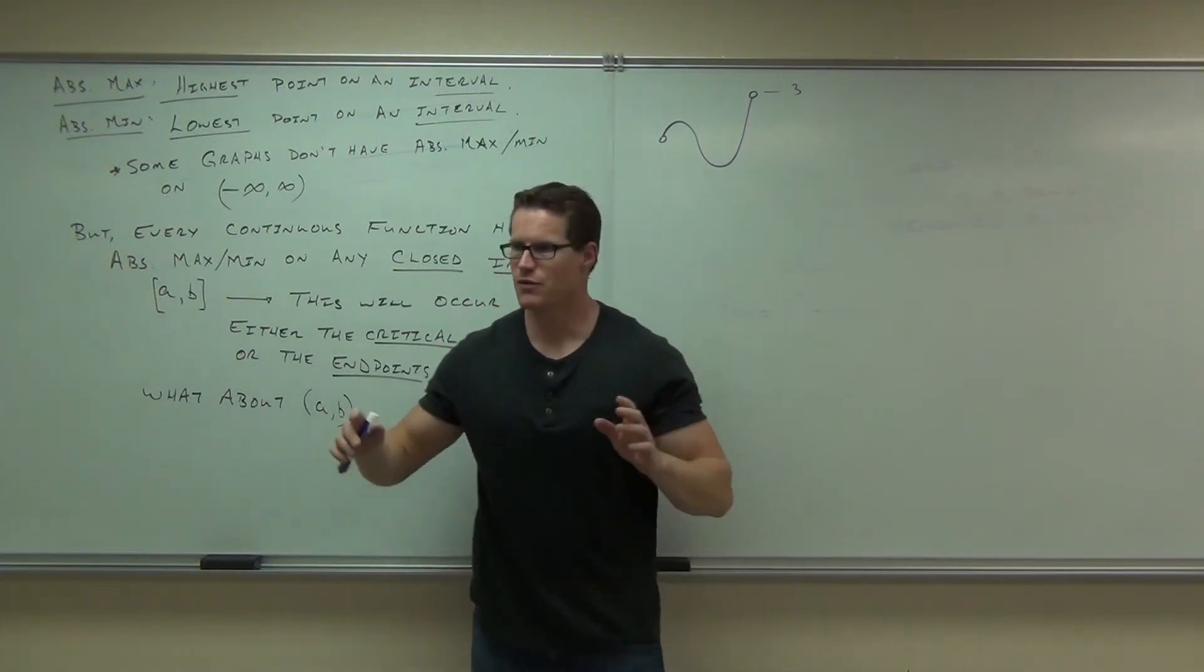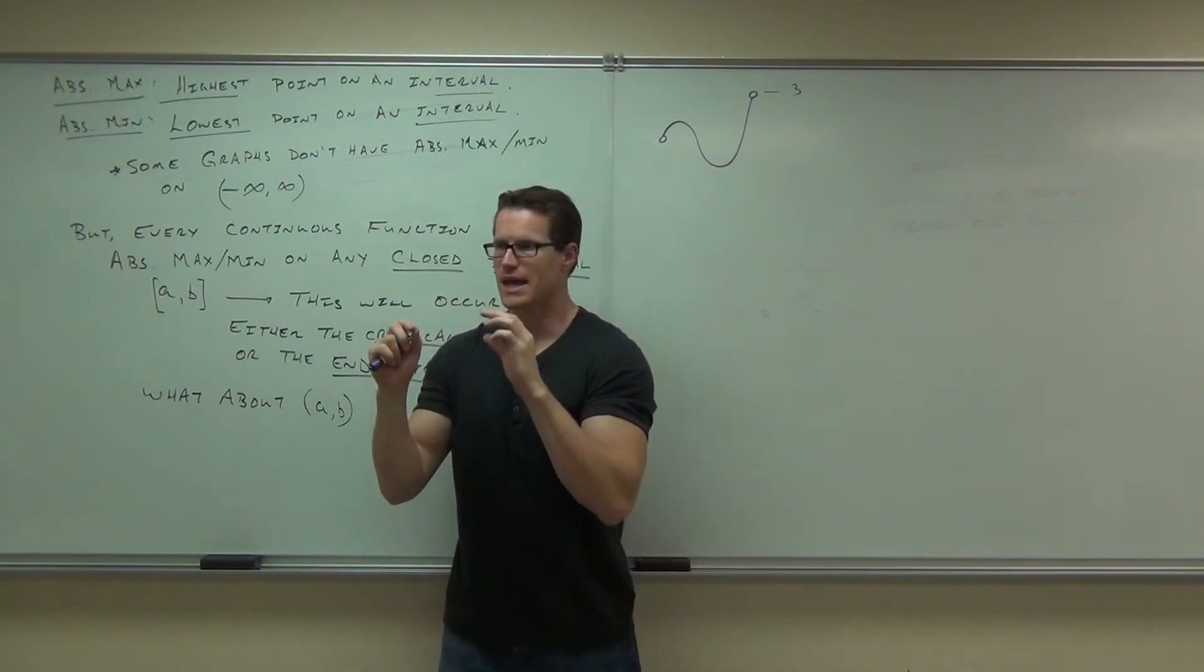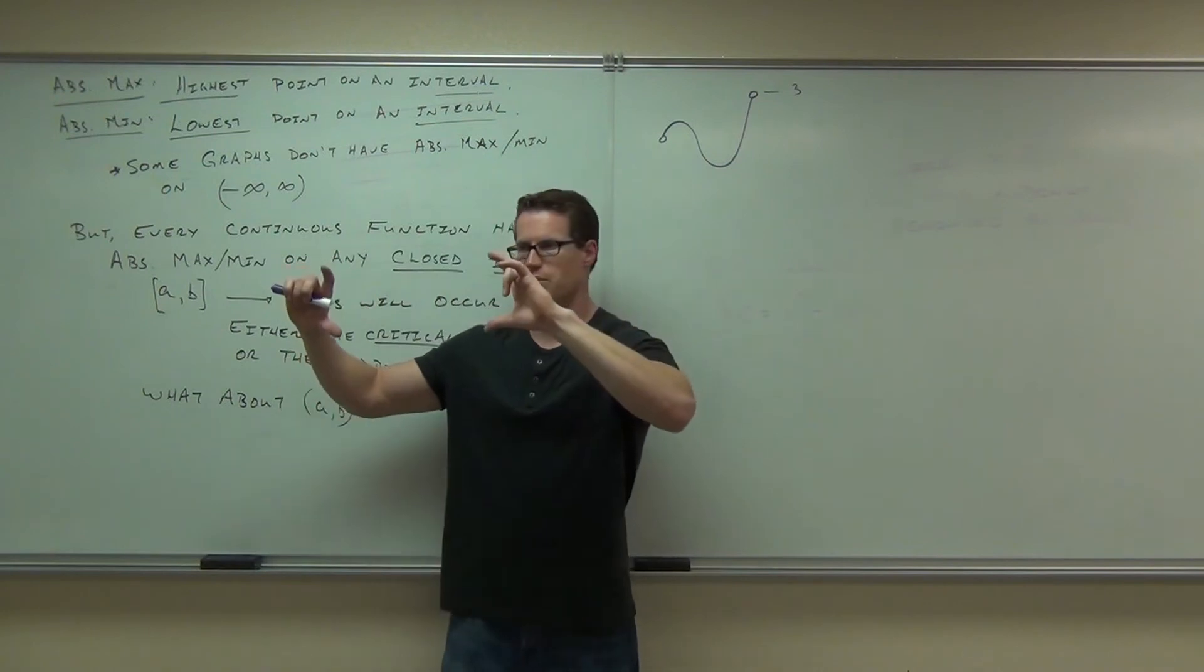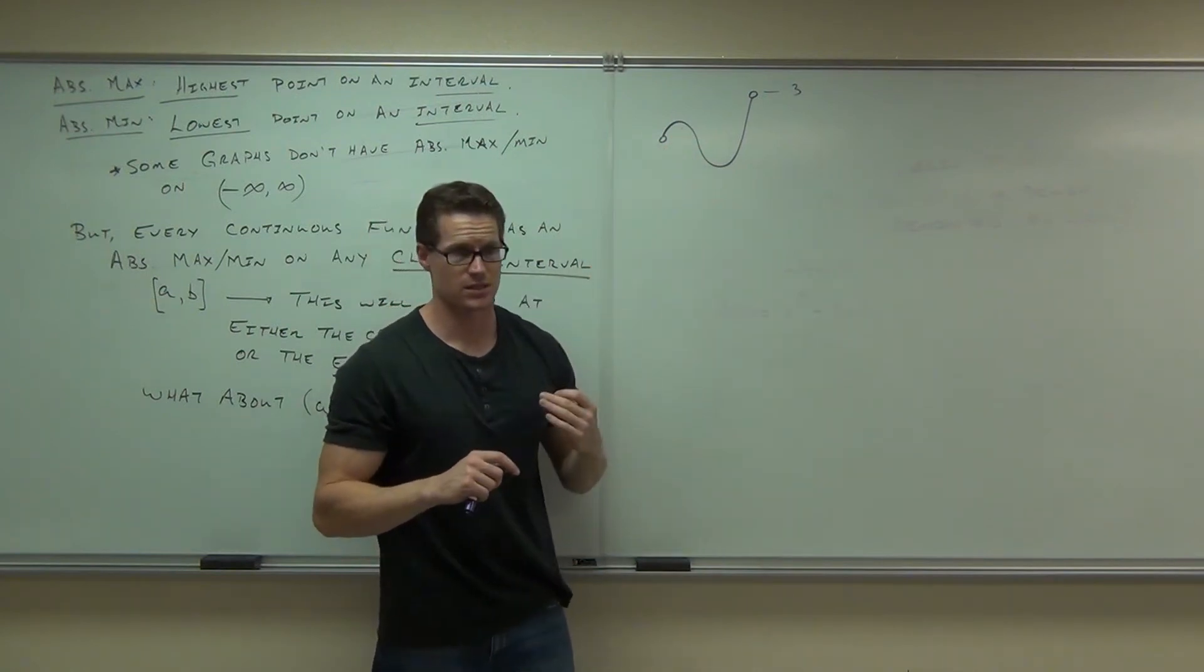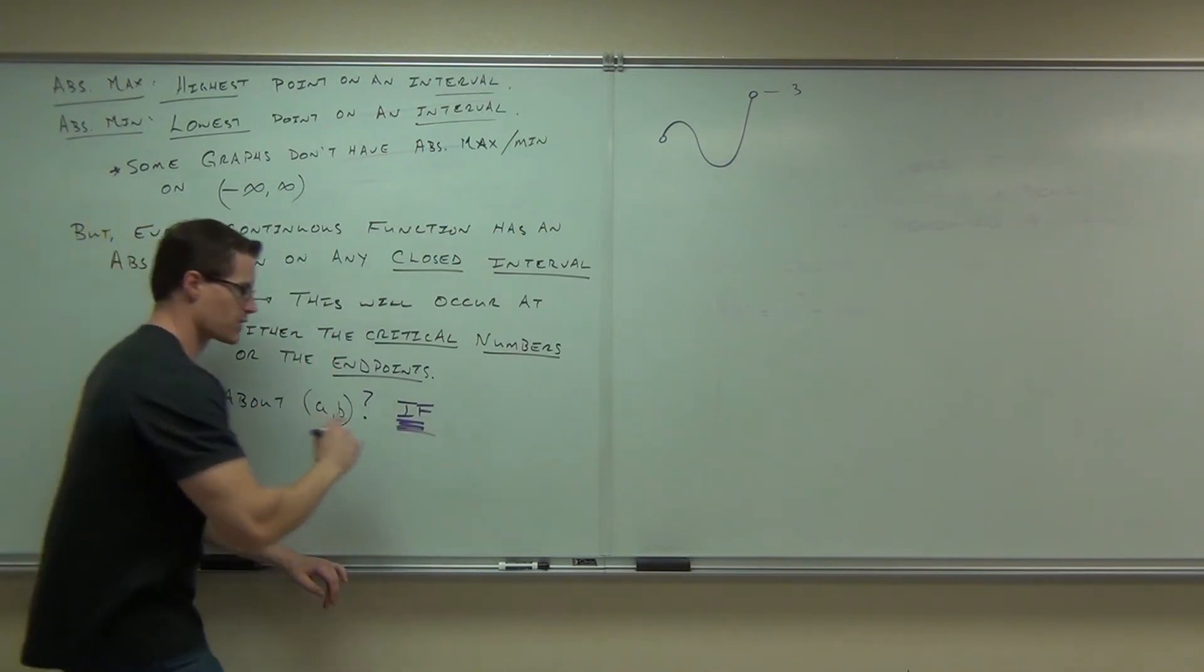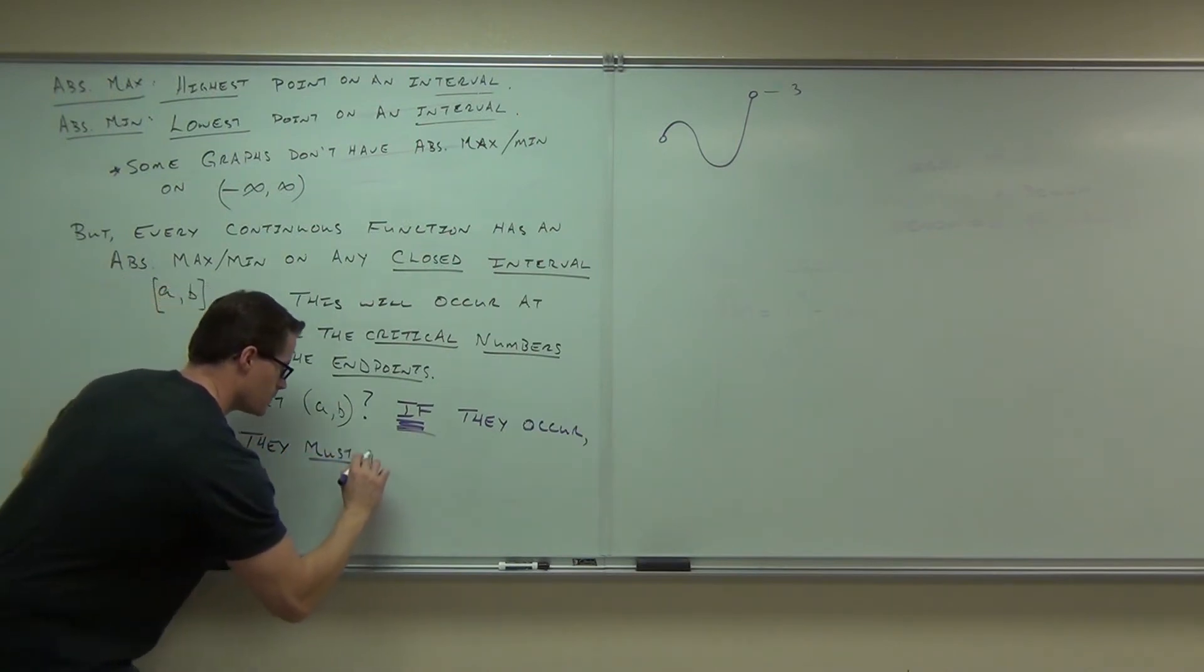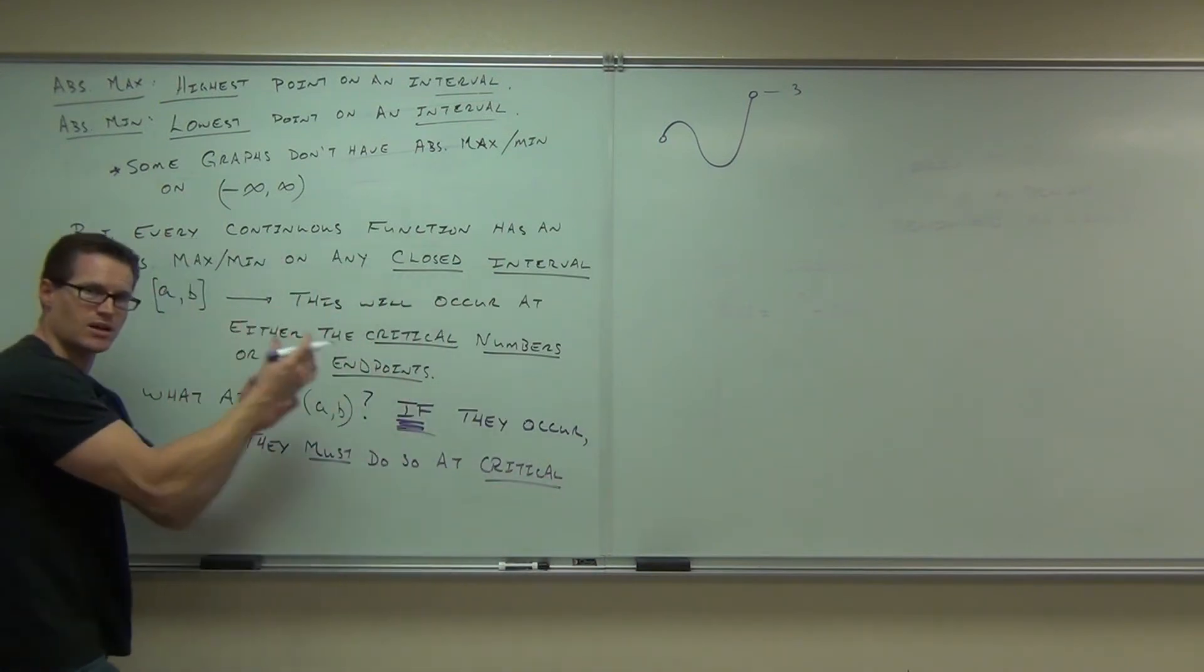What this says is that if you, listen carefully, if you've got a closed interval, you are going to have an absolute max and an absolute min if it's closed. Understand? If it's open, that means the absolute max and an absolute min must happen if they occur at a relative point, at a critical number. That's where they have to occur. If they don't occur there, then they don't exist at all. Closed intervals, you've got both. Open intervals, if they were to occur, they would happen at your critical numbers. If they don't, then they don't exist.